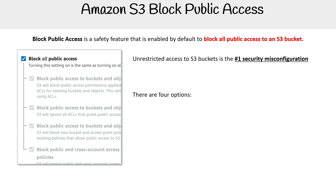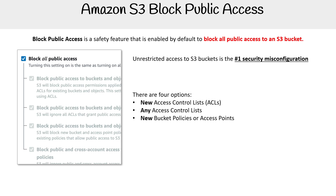There are four options available here. We have 'Block All Public Access,' but once we check that off, we can narrow down exactly what we want. There's a checkbox for whether new access control lists are allowed to have public access, or any access control lists. It's also available for new bucket policies or access points, or any bucket policies or access points. They used to be separate, but access points were added and lumped together.